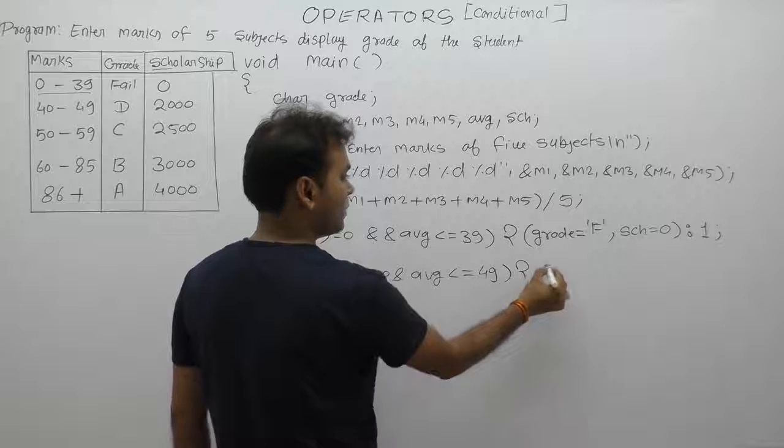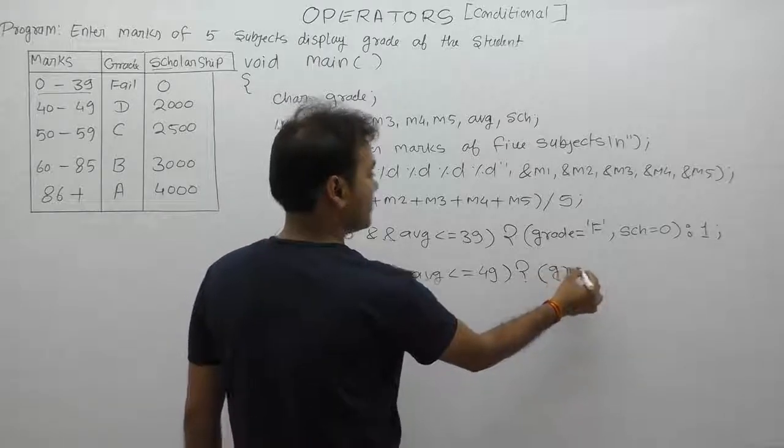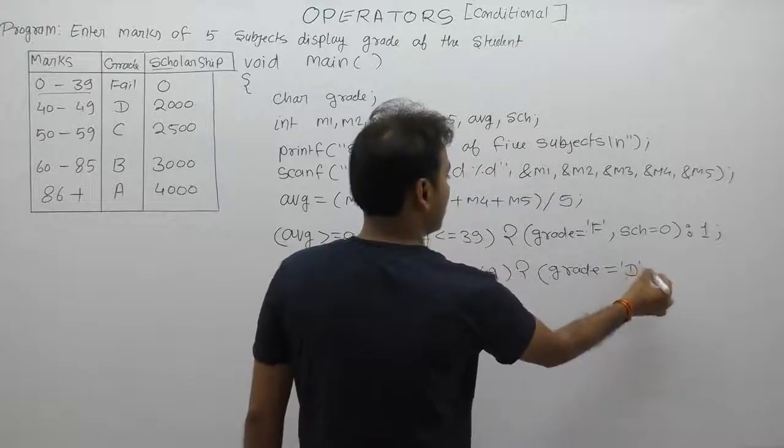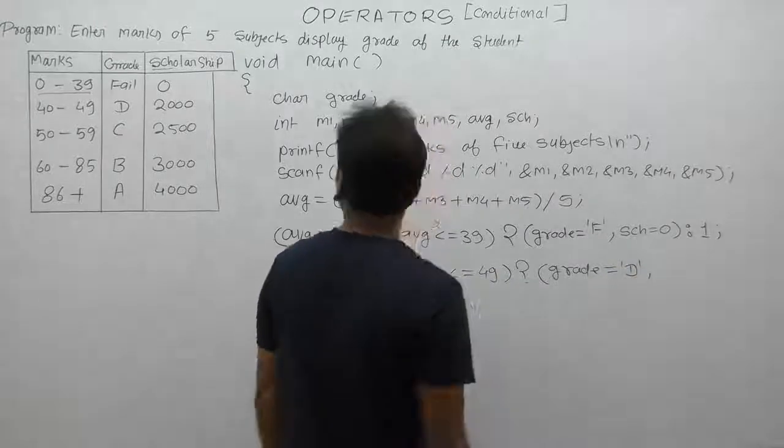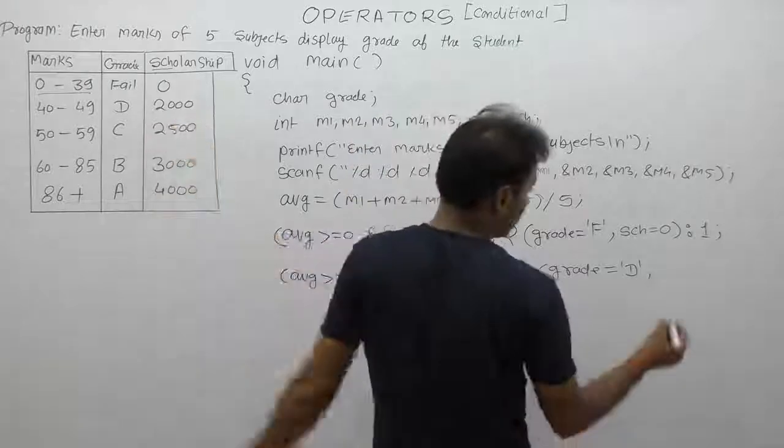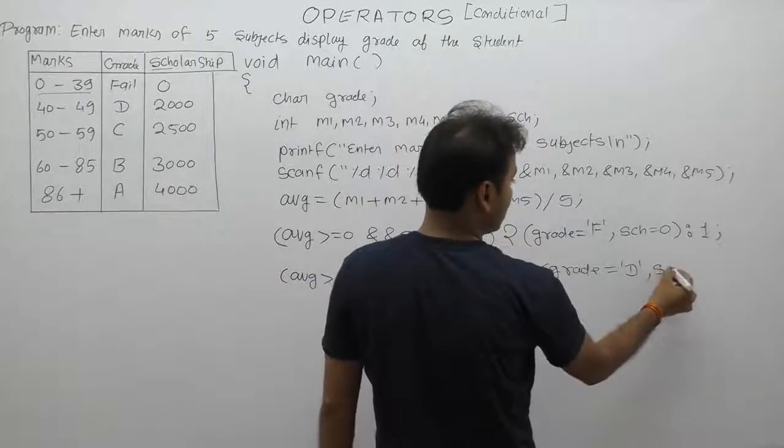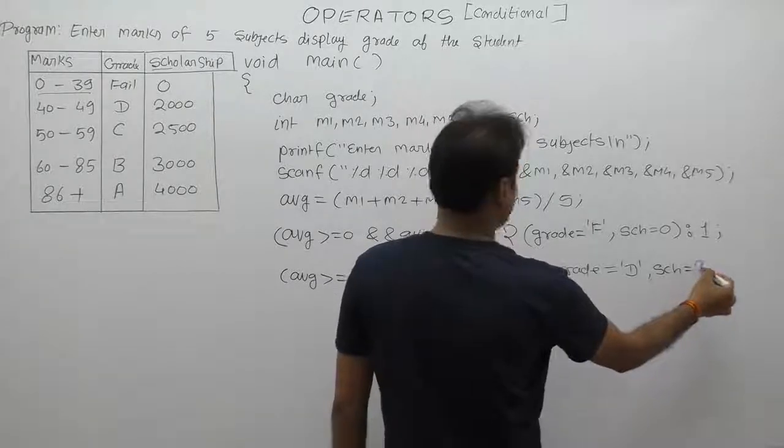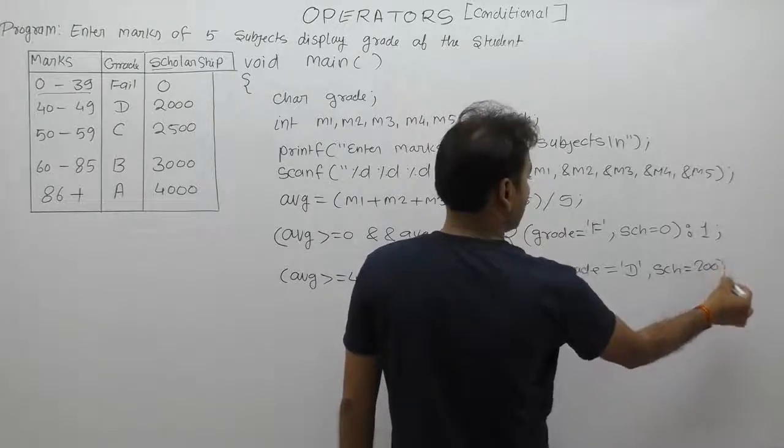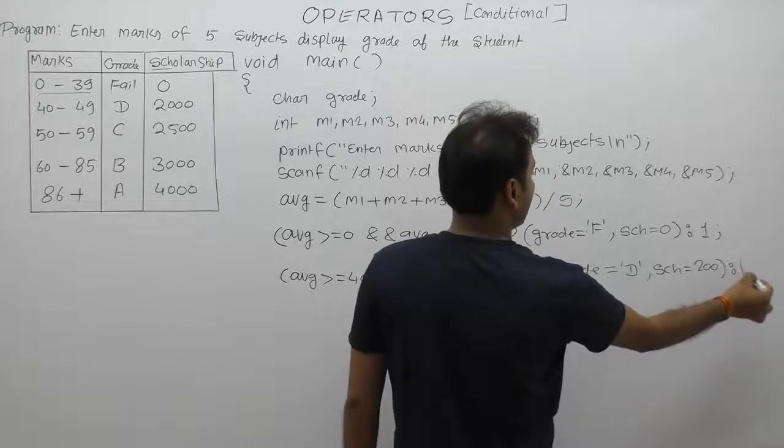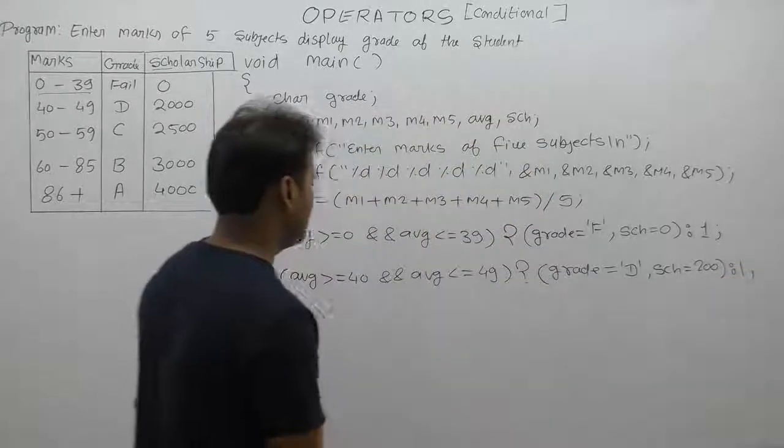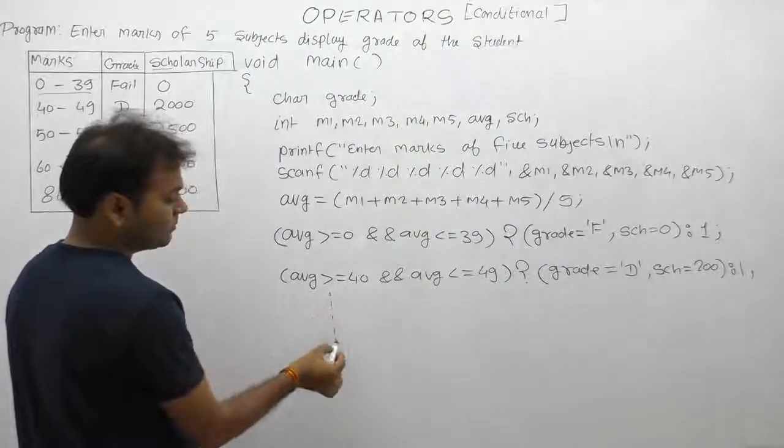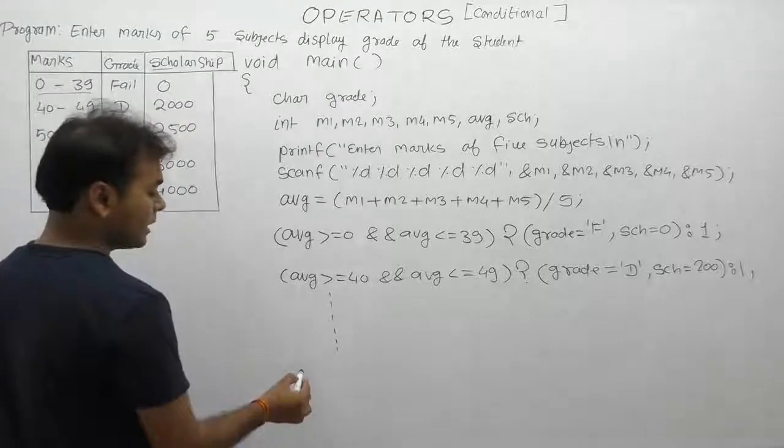Then again we provide grade. In this case, the grade is D. And what is the scholarship? The corresponding scholarship value is 2000. Therefore, we are initializing the scholarship variable sch equals to 2000, and close it. Similarly, we handle the remaining conditions - three, four, five - and finally complete all cases.